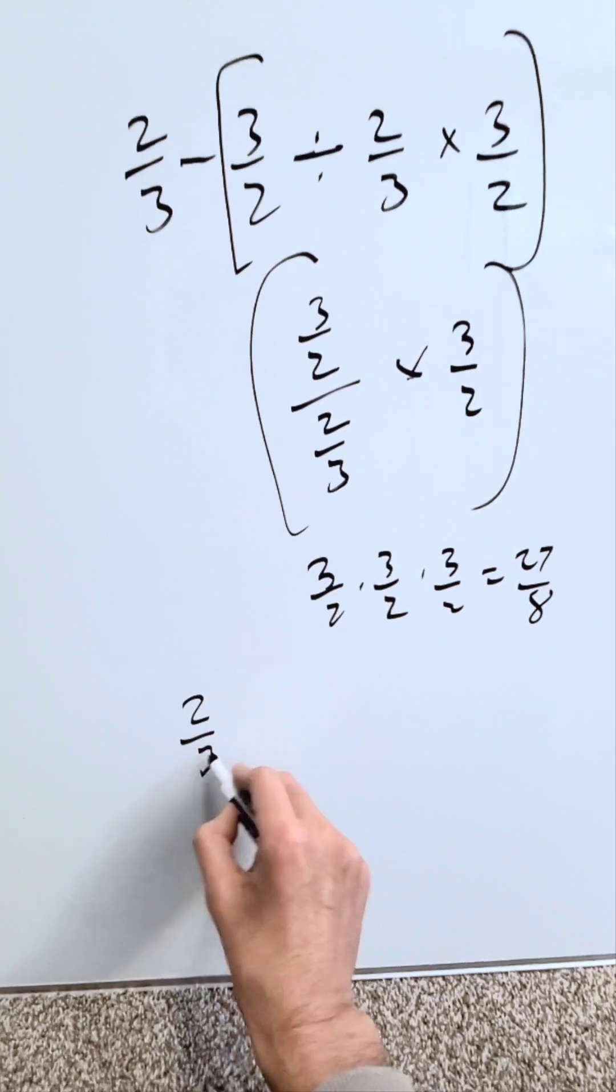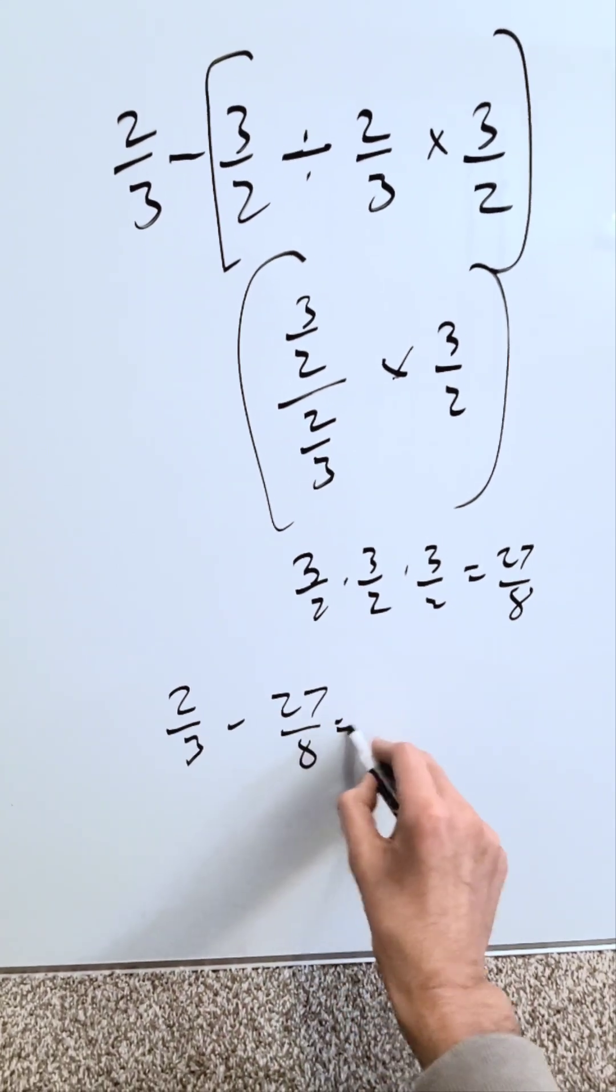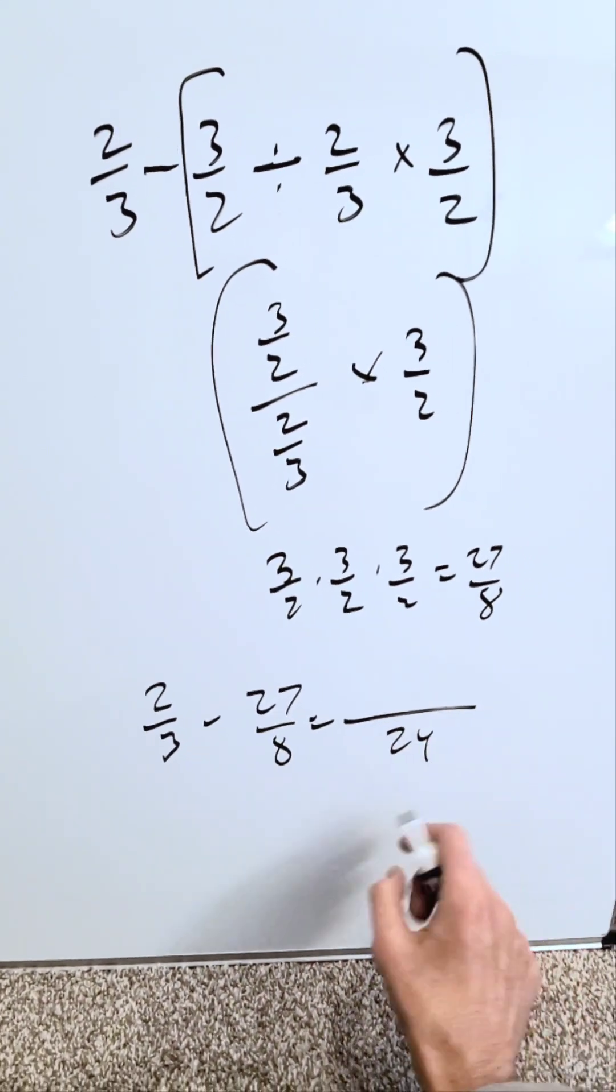Now I have 2 over 3 minus 27 over 8 and this will take you through to your completed answer.